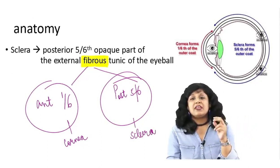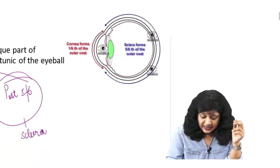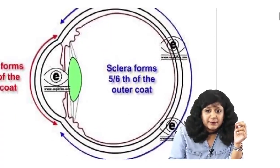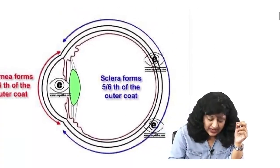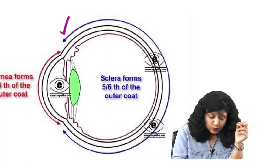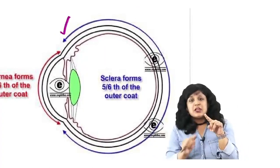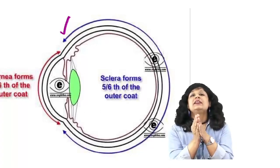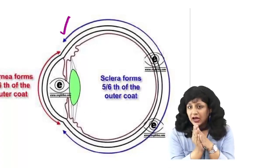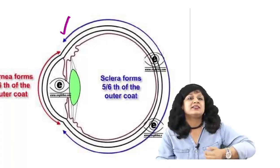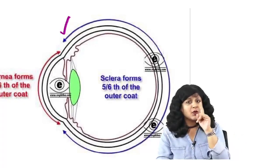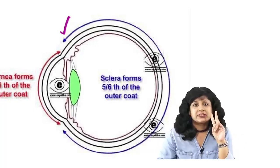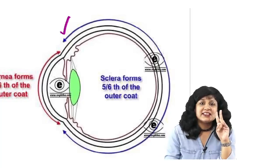So we are dealing with this posterior part of the fibrous coat of the eyeball. The blue arrow shown here is dividing the whole eyeball into six parts. Out of these six parts, the anterior one-sixth is your cornea and the posterior five-sixth is the sclera.